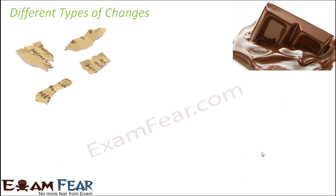There can be many different types of changes. Some changes cause a change in shape; some cause a change in size. For example, torn pieces of paper are smaller than the original single piece — so there is a change in size and shape. If you look at melting chocolate, there is a change in shape and texture. Initially it was a solid bar, but now it is semi-liquid.